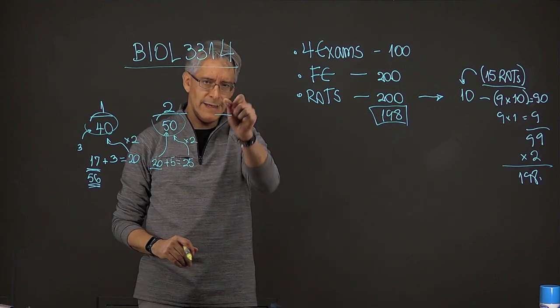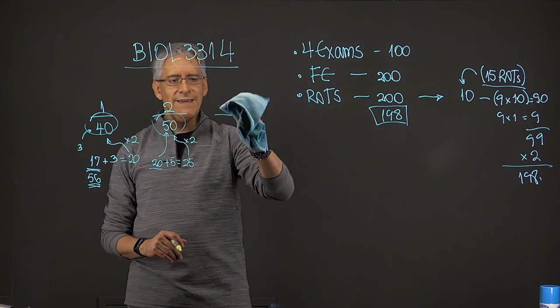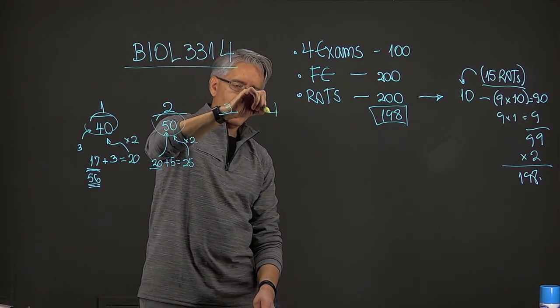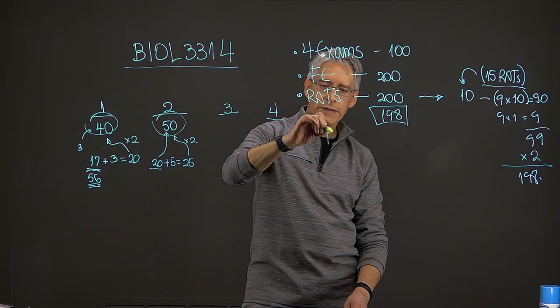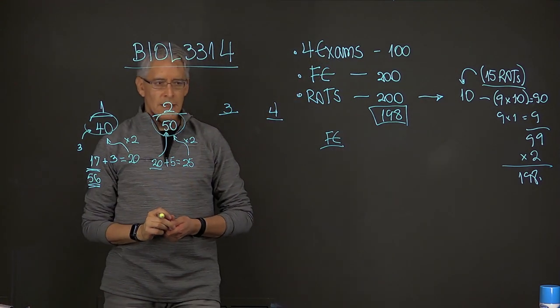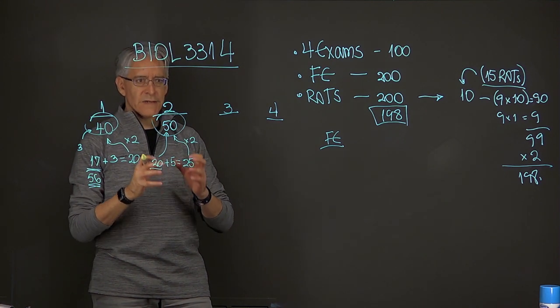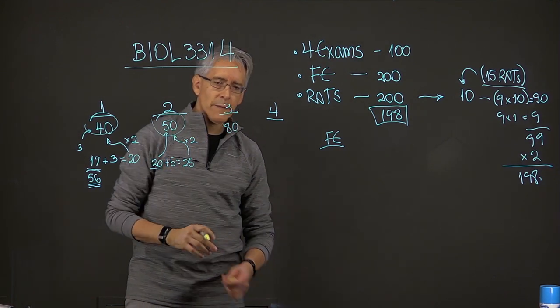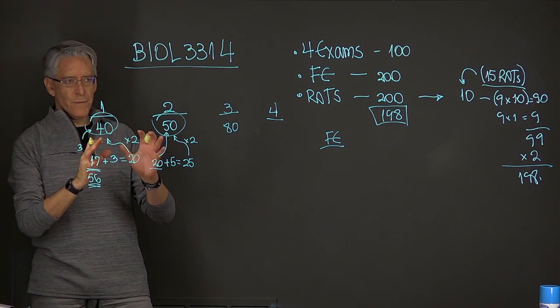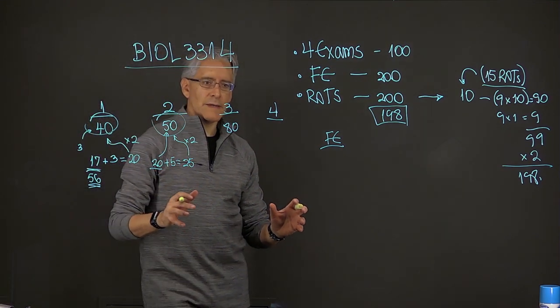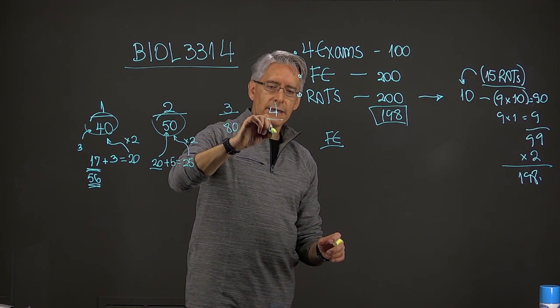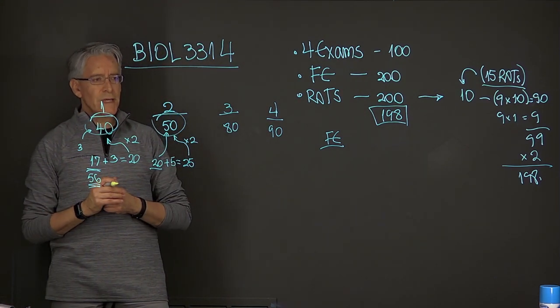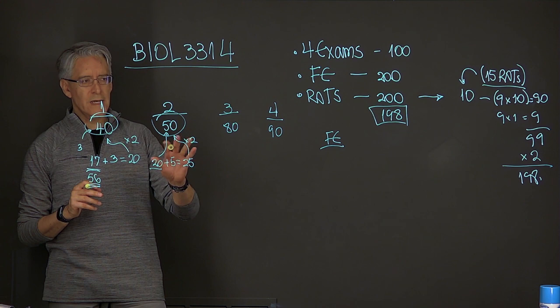The only thing that is missing right now are exams number three and exam four, and then the final exam. That's the other component that is still missing at this point. So let's assume the student does fairly well in the exam number three. Let's say that the student gets a total of 80 points. But let's also assume that in exam number four, the student does really great, meaning the student gets a 90. It could be better. It could be a 96. It could be a 100. But let's assume that it is really good, but not excellent. So let's give it 90 points for exam number four.